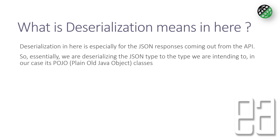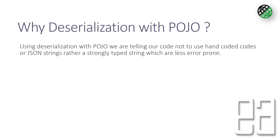Why are we deserializing to POJOs? Using deserialization to POJOs we are telling our code to not use hand-coded values or JSON strings, but rather strongly typed structures which are less prone to error. These are very handy when working with very complex data structures or JSON structures.